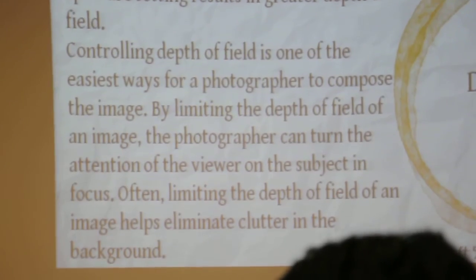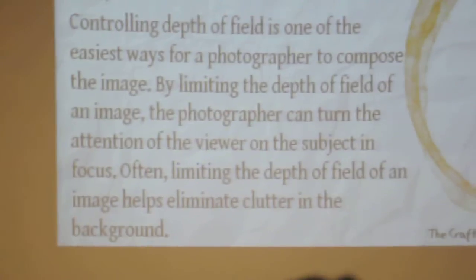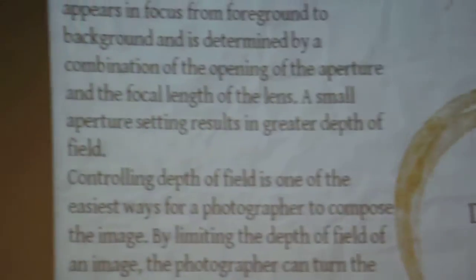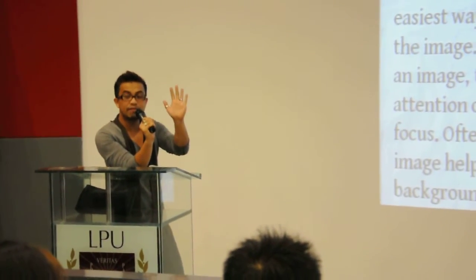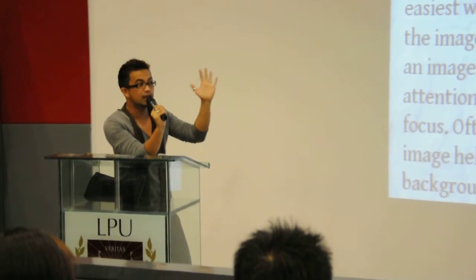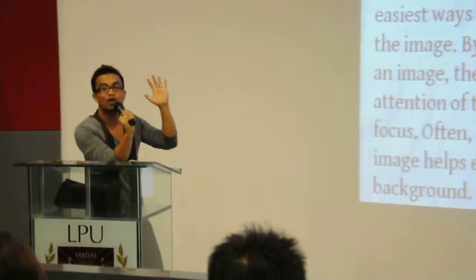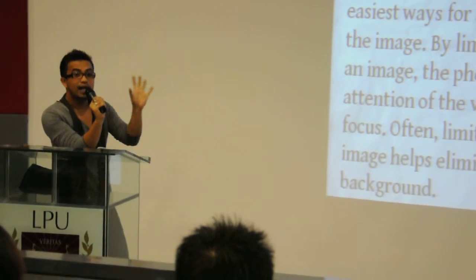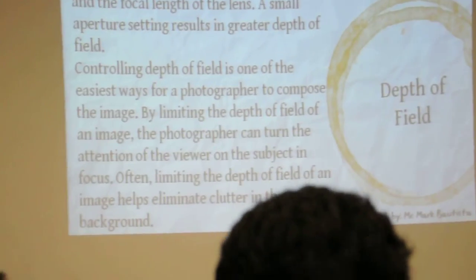So depth of field — as you notice when you see pictures, pictures often have these shallow things and then there are clear things. So when the part that is clear is in front and the part behind it is shallow, that is called shallow background, where the background is not clear and the front part is clear. And the opposite is shallow foreground.